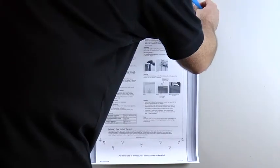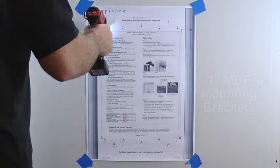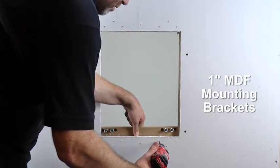While more precision is required to properly install these speakers, a full-size mounting template with instructions is provided to get the proper hole alignment and cut-out dimensions. Dual 1-inch MDF mounting brackets come with pre-drilled holes for easy installation into the wall.